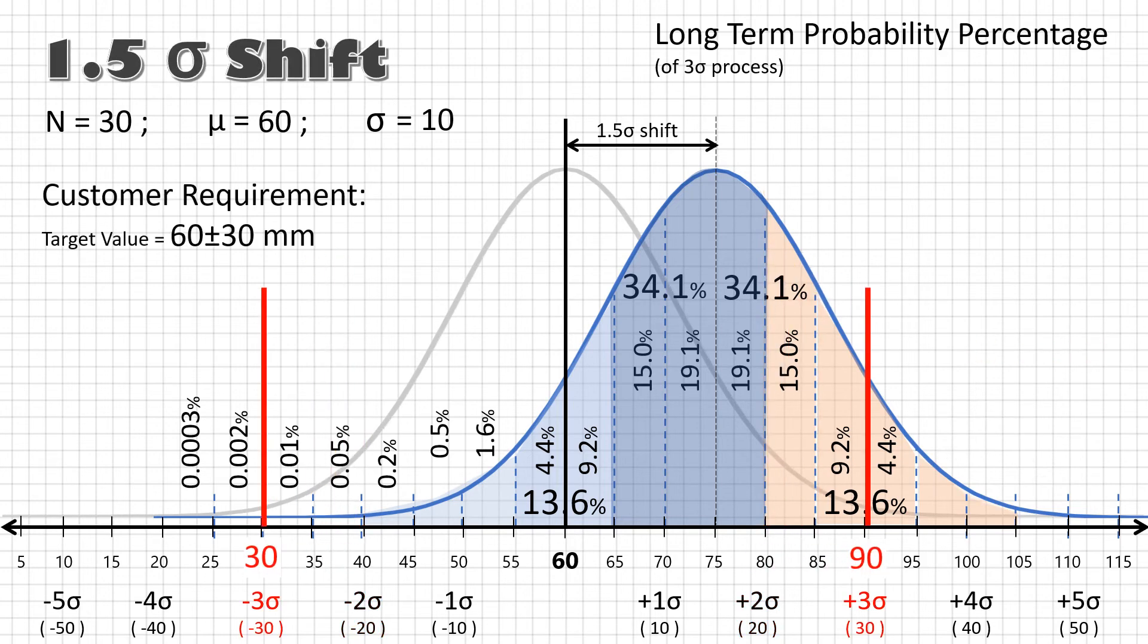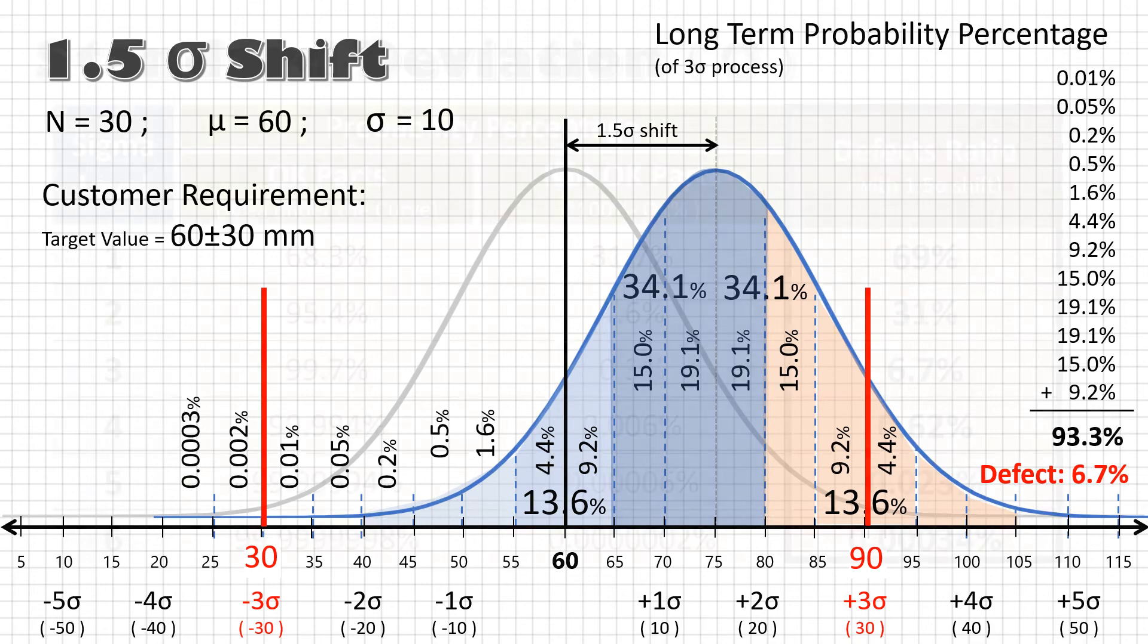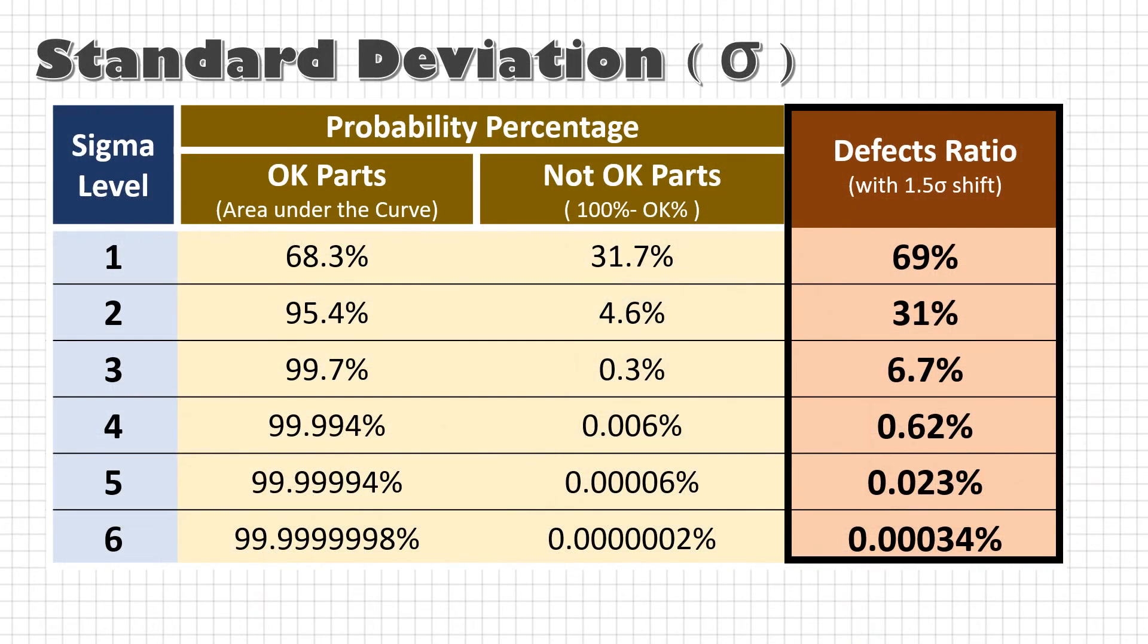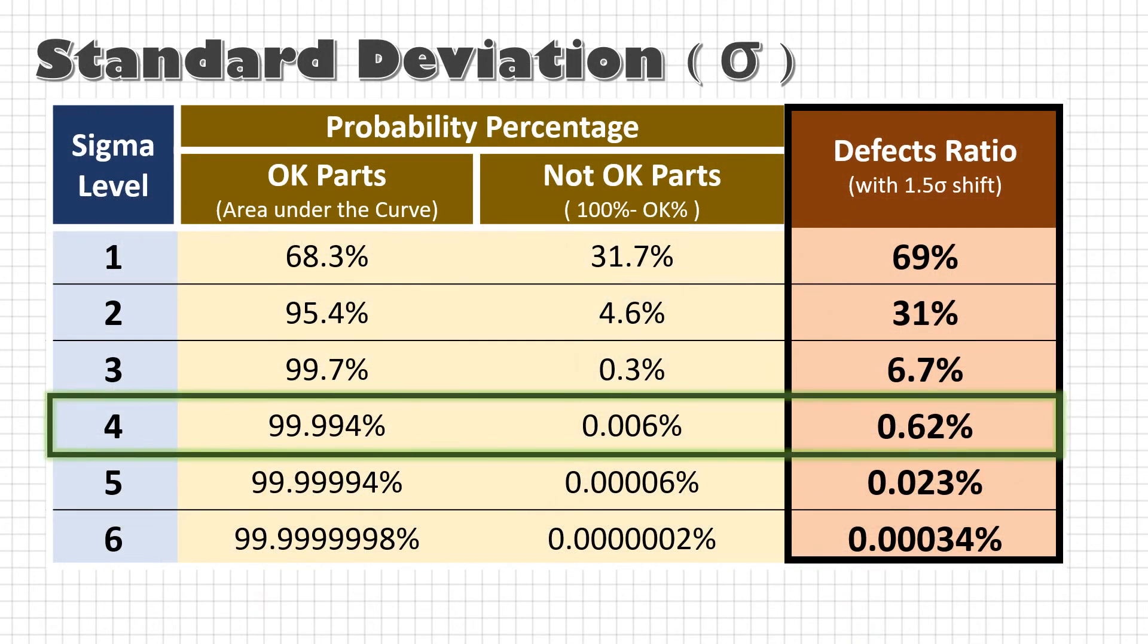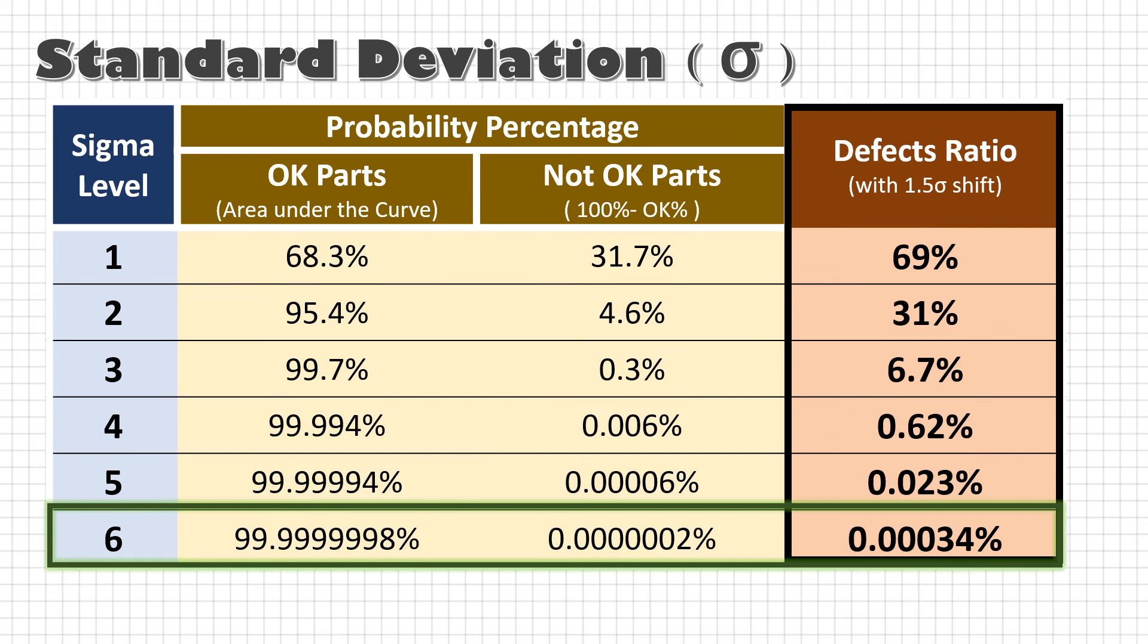Even for a 3 sigma process, the okay ratio will be 93.3% and defect ratio will still be 6.7%. The minimum acceptable level today is 4 sigma process, where defect ratio is 0.62%. And now, industries are targeting for 6 sigma process with defect ratio of 0.00034%. That is only 3.4 defects per million.